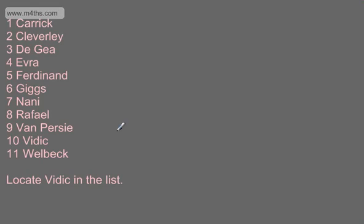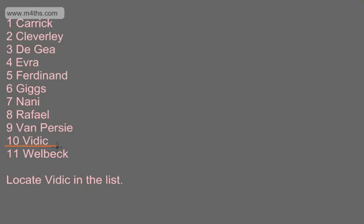Now, the pet hate of most teachers is students saying, well, it's just there, I've already seen him. That's quite clear, but the idea is that we get used to implementing the binary search algorithm. Remember, if this is a bank's list of customers, there's millions. So, how do we start?